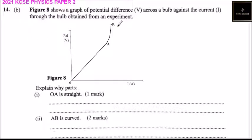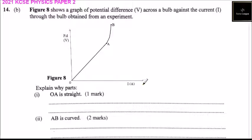Question 14B: Figure 8 shows a graph of potential difference V across a bulb against the current I through the bulb, obtained from an experiment. The y-axis represents potential difference, the x-axis represents current, and the graph goes from O to A, then A to B. Explain why part OA is straight — one mark.